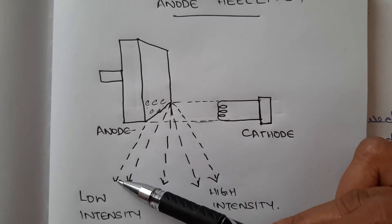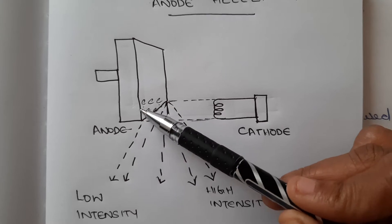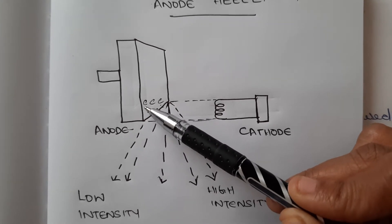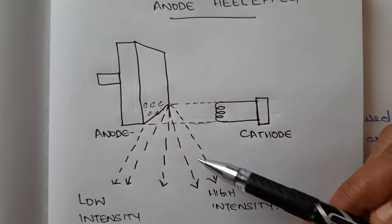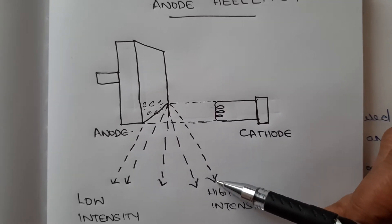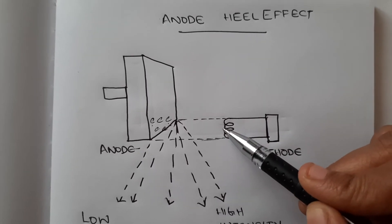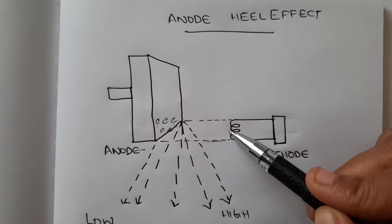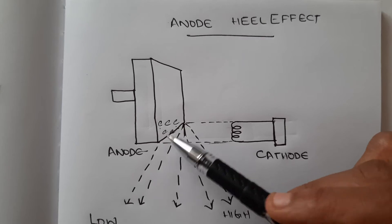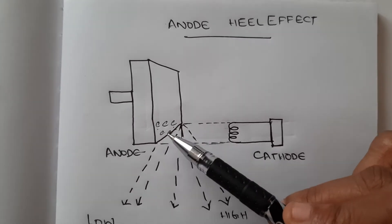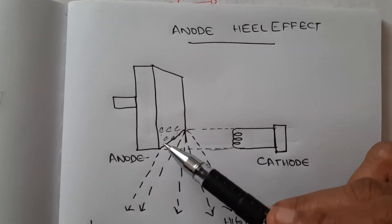The x-rays produced towards the anode side are caused by electrons that are more deeply absorbed compared to the electrons that produce x-rays towards the cathode side. To repeat: electrons produced as a result of thermionic emission are accelerated towards the anode, and they hit the target at different positions.